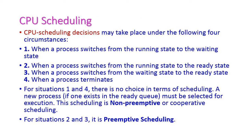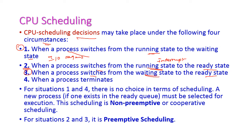During CPU scheduling, decisions may be taken under four circumstances. First, when a process switches from running state to waiting state — for example, when an IO request occurs. Second, when a process switches from running state to ready state — when an interrupt occurs. Third, when a process switches from waiting state to ready state — when IO completes. Fourth, when a process terminates and must exit the CPU. We must take scheduling decisions under these four circumstances.